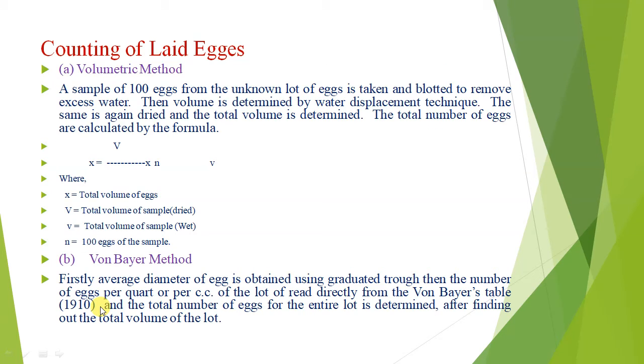For counting of laid eggs, two methods have been given for the counting procedure: the volumetric method and the Vaughan method.